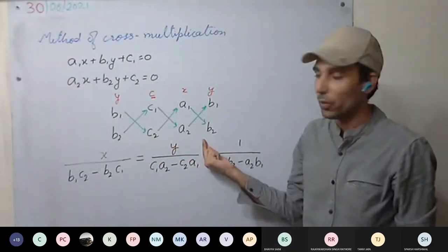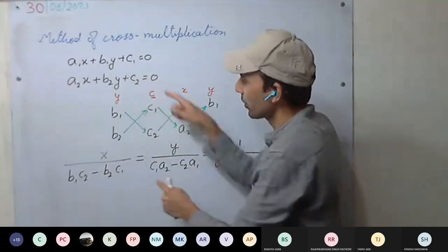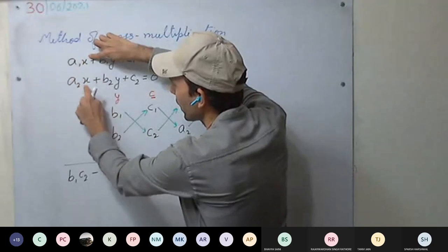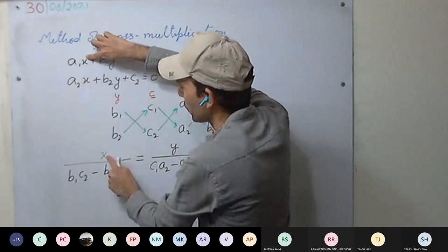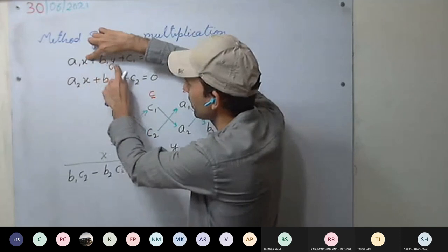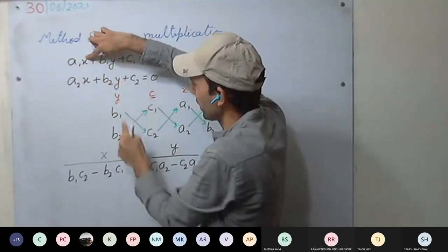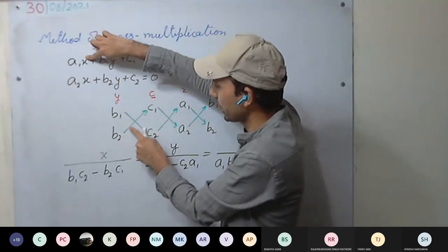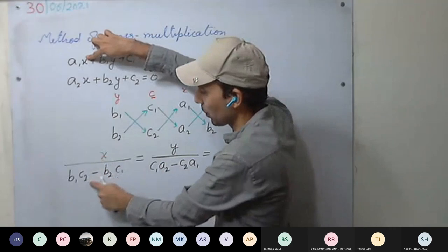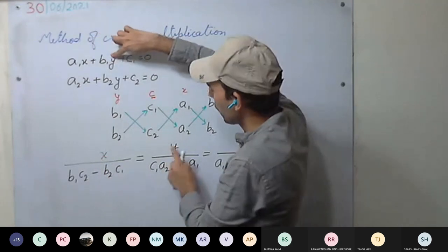Now we take the cross multiplication. We are solving for x first, so forget about the x terms and start from the next: b1c2 minus b2c1. So x divided by b1c2 minus b2c1. Then for y, forget about the y terms, and the next cross gives c1a2 minus c2a1.